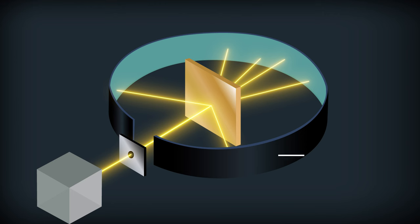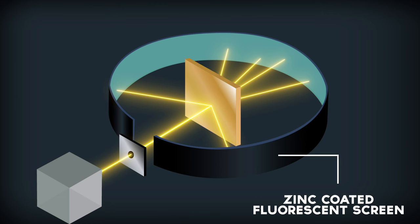The alpha particles were detected using a zinc-coated fluorescent screen. When the alpha particles strike the fluorescent screen, they produce scintillations.